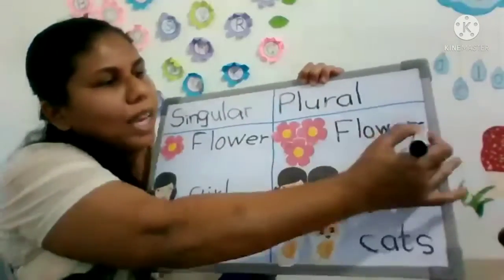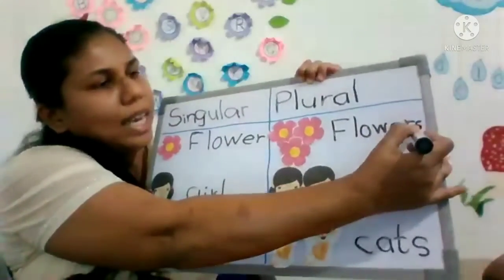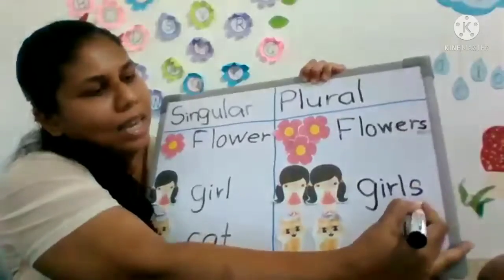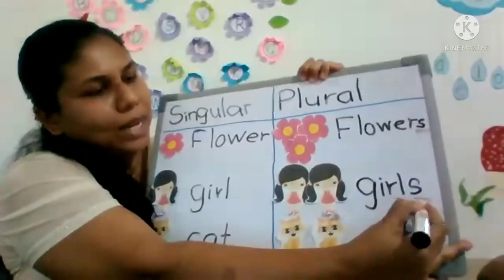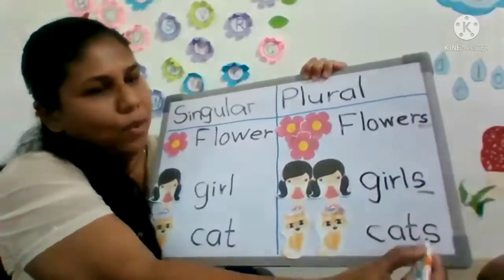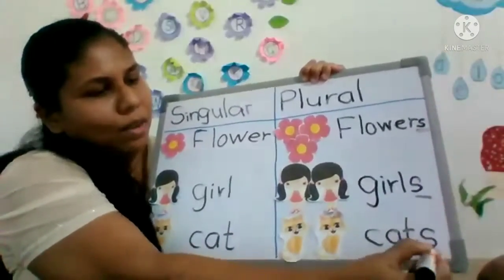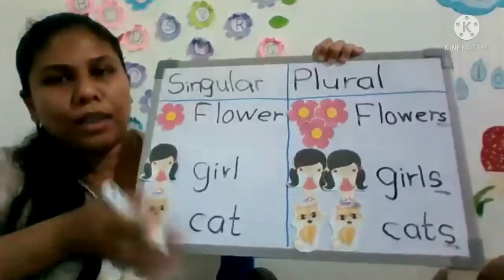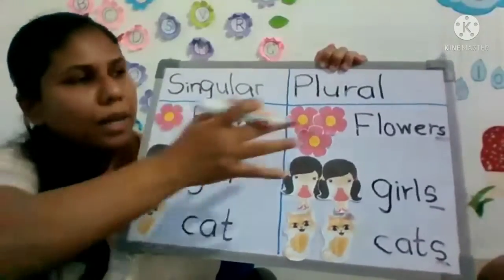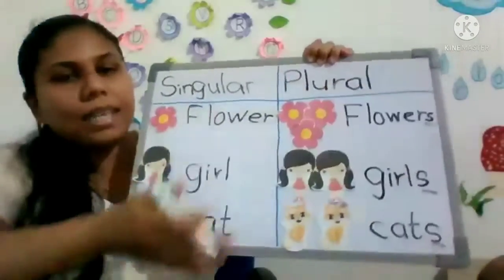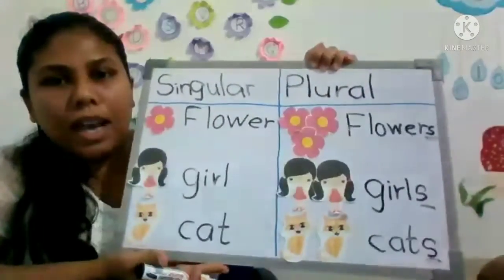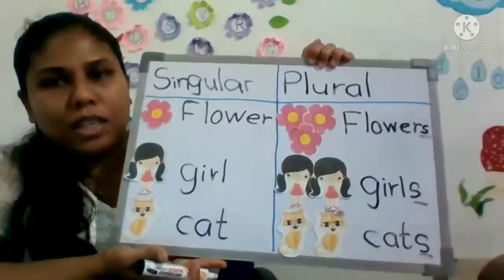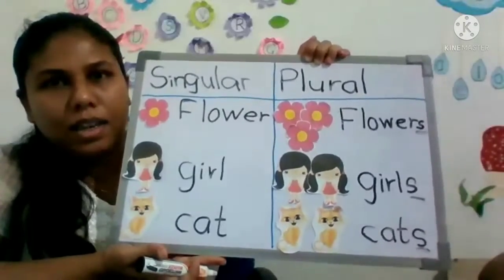Here we have added S. S is added, right? That makes it plural — bahu vachana. Singular eka vachana naampadha, S eka add karla bahu vachana haadhan. Right?